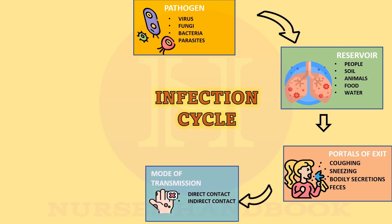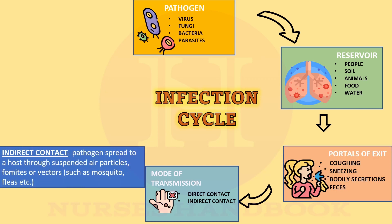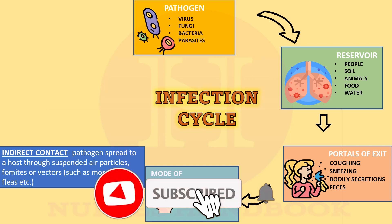The fourth element is the mode of transmission, which can be through direct contact or indirect contact. Direct contact transmission is when a disease-causing microorganism passes from the infected person to a healthy person via direct physical contact with blood or body fluids — examples include touching, kissing, and sexual contact. Indirect contact is when a pathogen spreads to a host through suspended air particles, fomites, or vectors such as mosquitoes, fleas, etc.